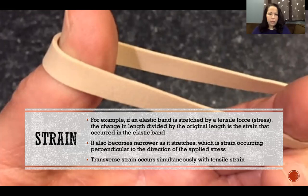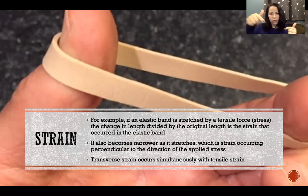There's transverse strain happening in addition to the tensile strain. There's the tensile strain that's the change in length as a result of the tensile stress, but at the same time while that tensile strain is happening, there's also a transverse strain where there's deformation and change in the shape of the material in the transverse direction relative to the axis of the force.